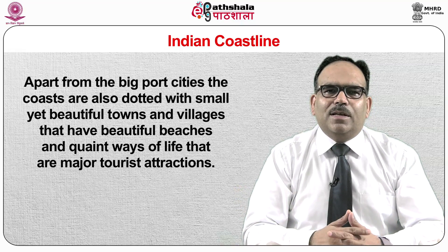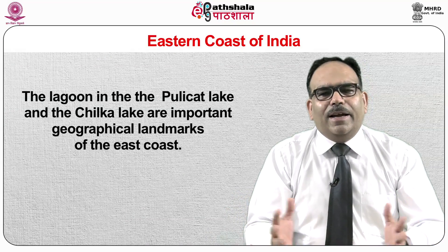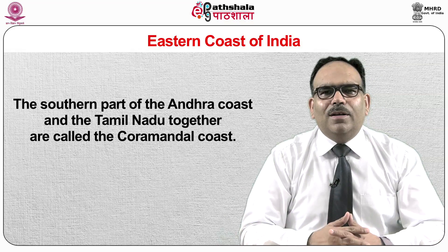The eastern coast is situated in the middle of the Eastern Ghats and the Bay of Bengal. It stretches from the Sundarbans delta to the southern tip of the Indian mainland, Kanyakumari. It is dotted with various deltas — those of the Mahanadi, the Godavari, the Krishna and the Kaveri. The lagoon in the Pulikat lake and the Chilka lake are important geographical landmarks of the east coast. The eastern coast has regional names: the Odisha coast is locally known as the Utkal coast, south of which lies the Andhra coast, and further south the Tamil Nadu coast. The southern part of the Andhra coast and Tamil Nadu together are called the Coromandal coast.